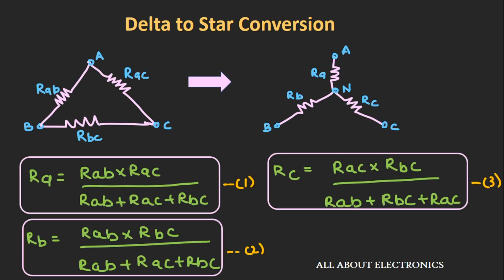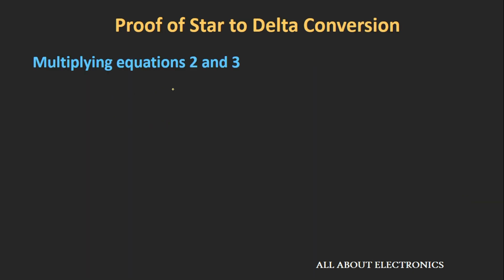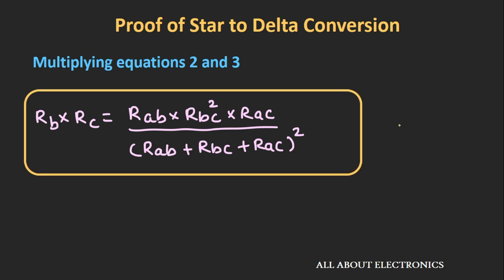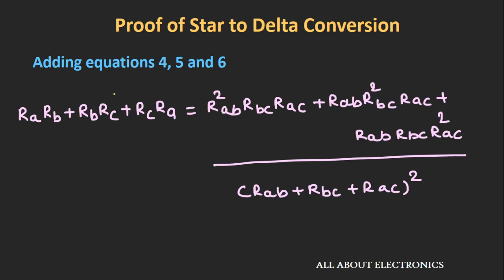Likewise, multiplying equations 2 and 3 gives: Rb·Rc = Rab·Rbc²·Rac divided by (Rab + Rbc + Rac)². Call this equation 6. So we now have equations 4, 5 and 6. Adding these three equations together gives a combined expression.